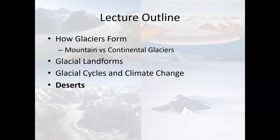Let's switch gears now and talk a little bit about deserts on Earth's surface and what causes those. Glaciers form where it's cold, but deserts form not where it's hot necessarily, but where it's dry.